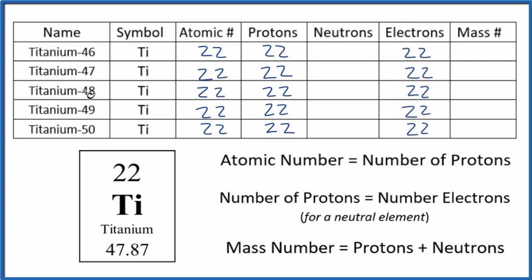So when we look at isotopes here, the neutrons and the mass number, that's the only thing that's going to be different. So here's how we figure it out. When we're given the name titanium 46, this 46 here, that's the mass number. So we can write the mass number in for all of these isotopes.